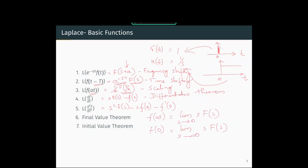The final value theorem helps us identify the value of the function at infinity — the final value — which can be found by the limit as s tends to 0 of s·F(s), where F(s) is the Laplace transform of f(t). The initial value theorem helps us find the initial value, given by the limit as s tends to infinity of s·F(s). These two theorems will be very helpful in control systems.